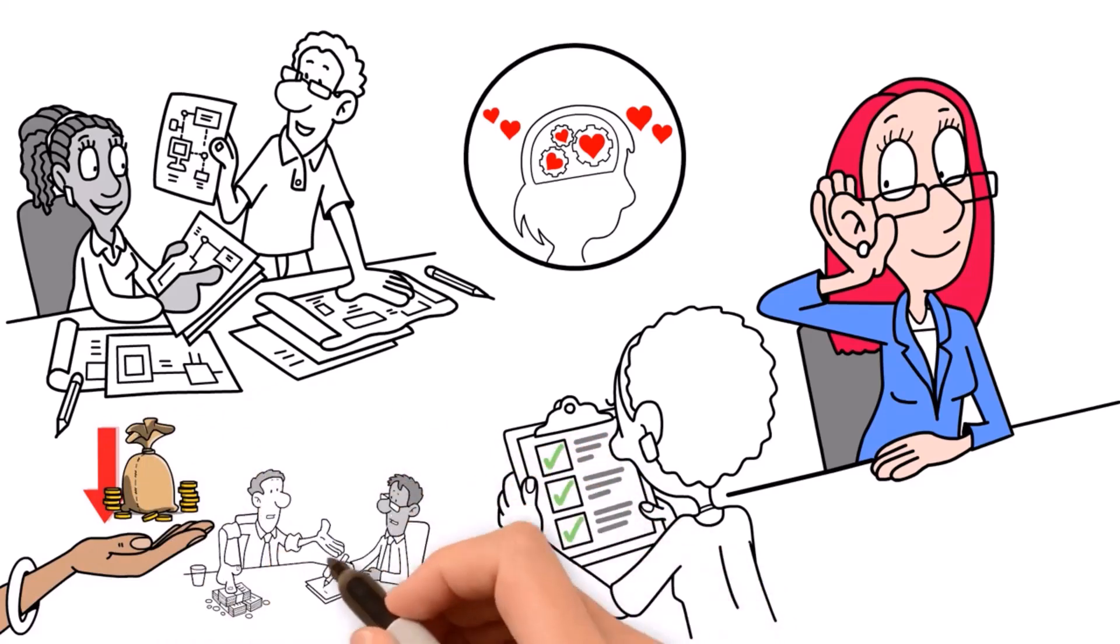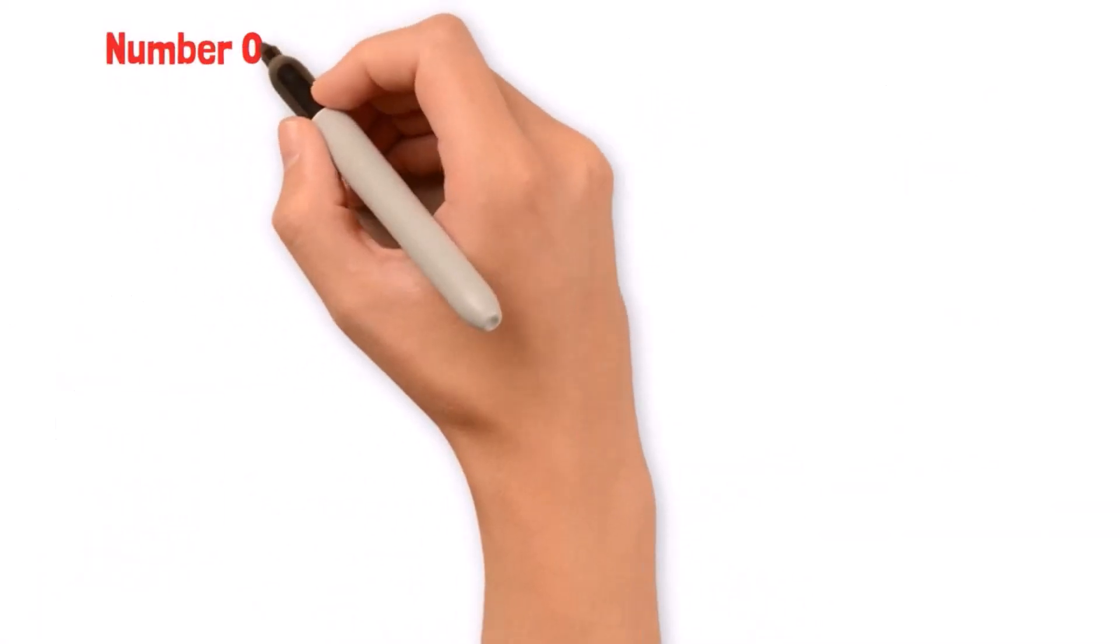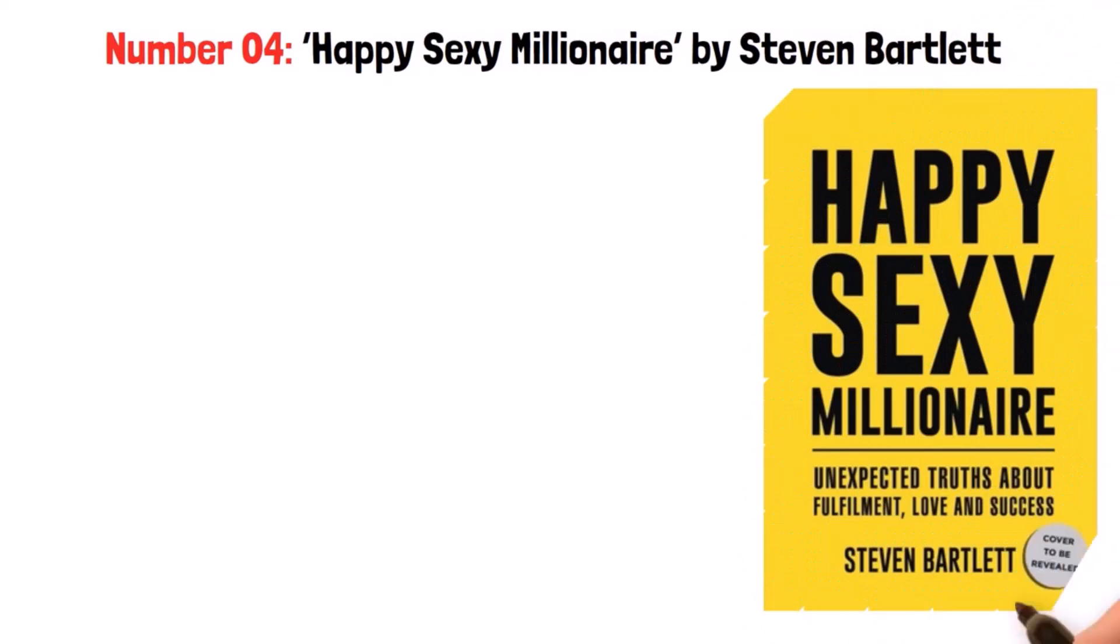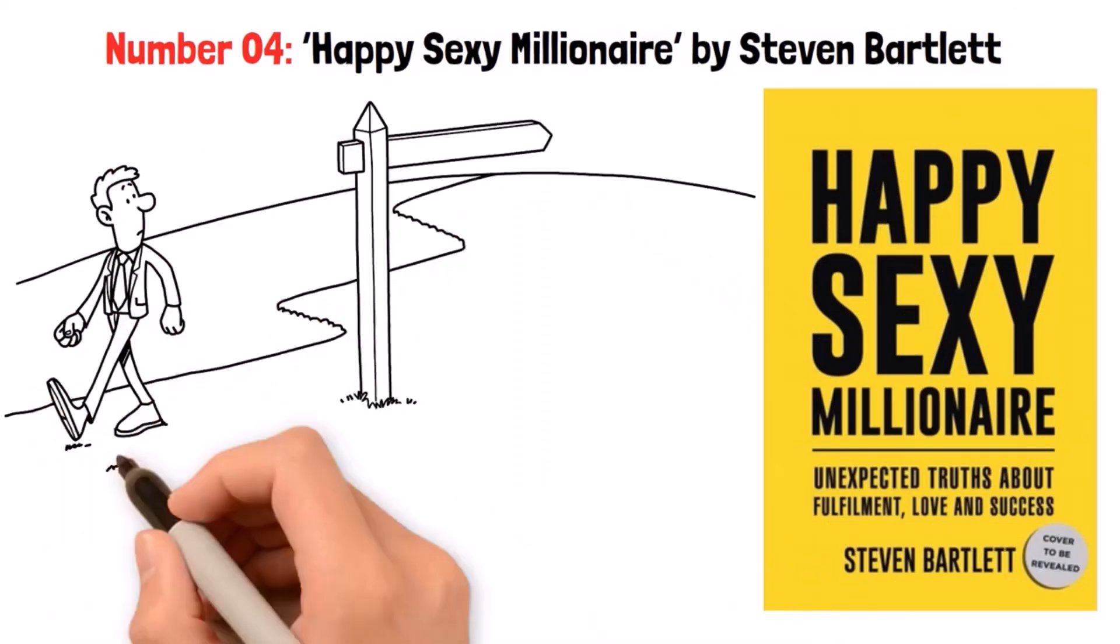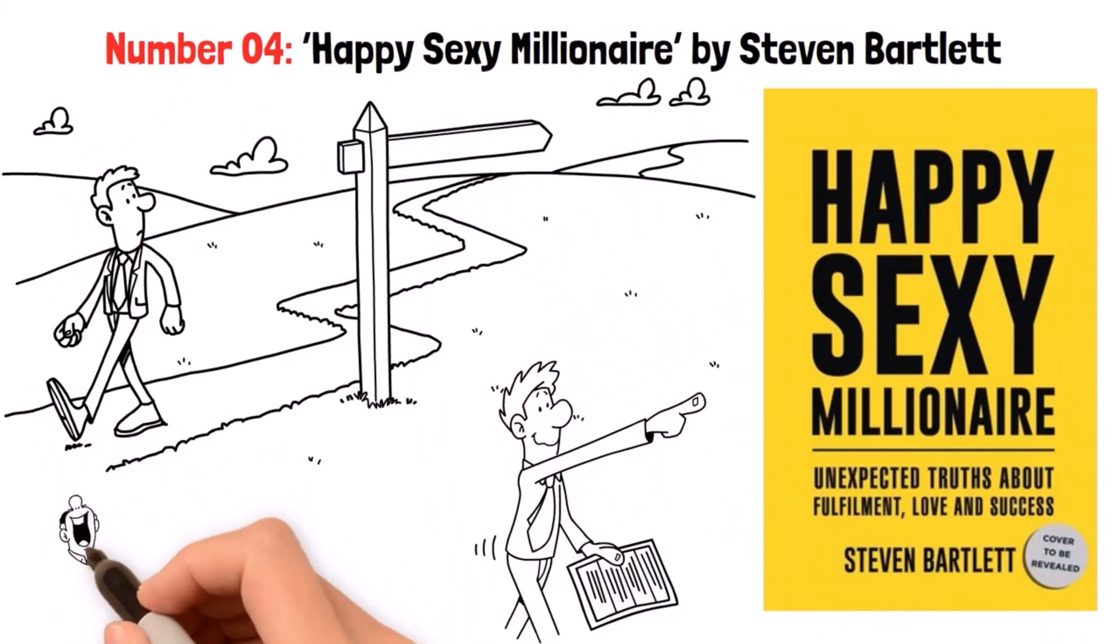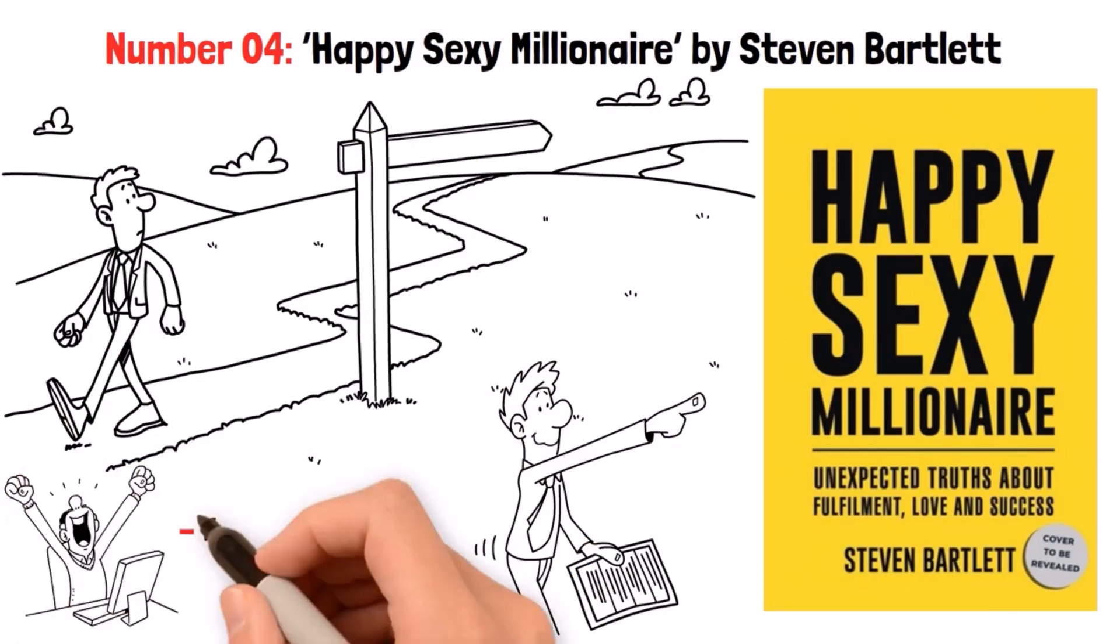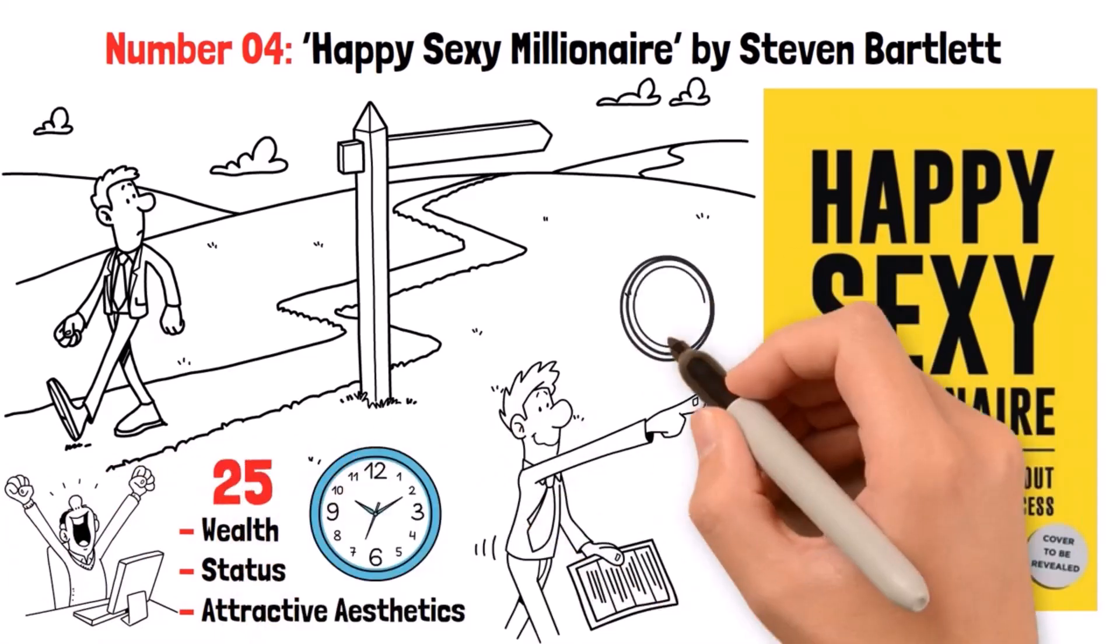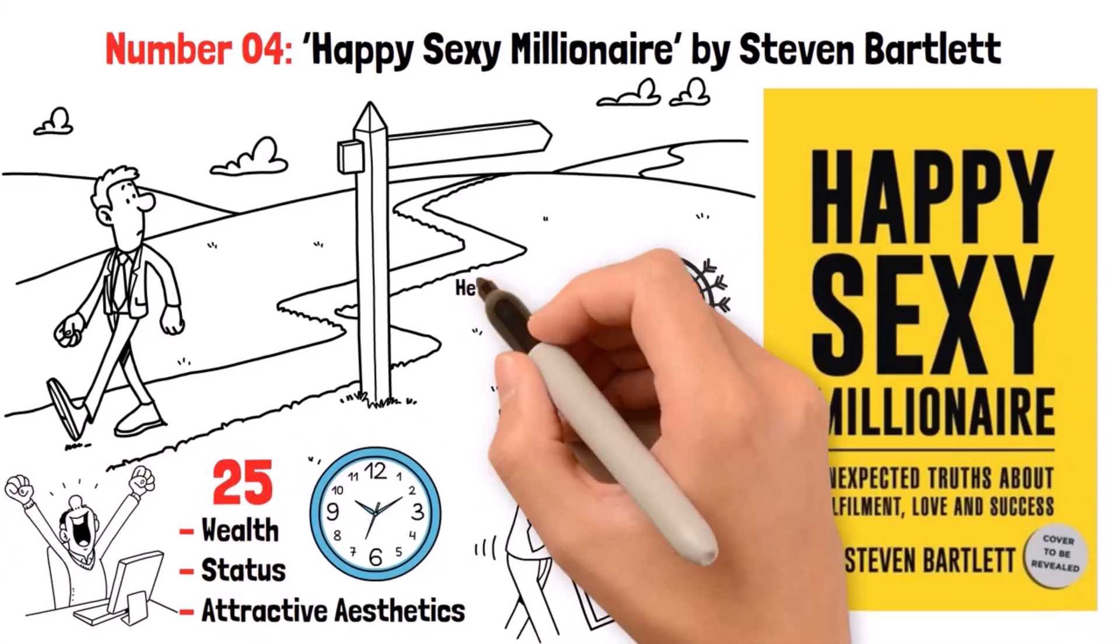Number 4: Happy Sexy Millionaire by Stephen Bartlett. In this book, Mr. Bartlett offers profound insights gained from his personal journey of self-discovery. As an ambitious young entrepreneur, he initially equated success with acquiring wealth, status, and attractive aesthetics. However, by age 25, when he had attained all of his goals, he found himself still feeling unfulfilled.